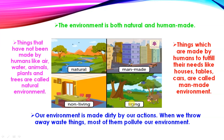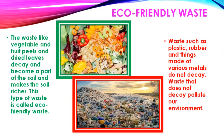Our environment is made dirty by our actions. When we throw away waste things, most of them pollute our environment, like plastic bottles and polythene. The waste like vegetables and fruit peels and dried leaves decay and become a part of the soil, making the soil richer — meaning good for growing crops. This type of waste is called eco-friendly waste.